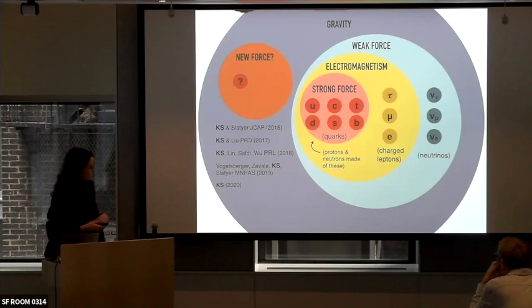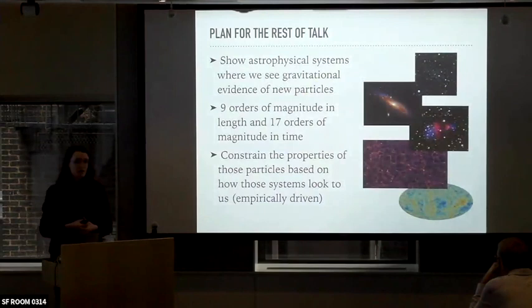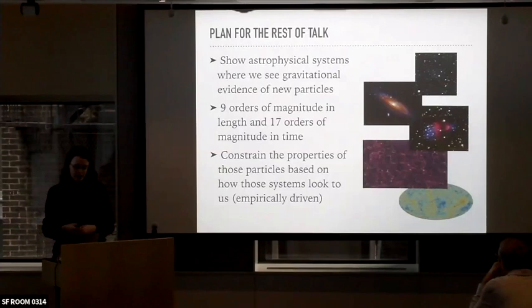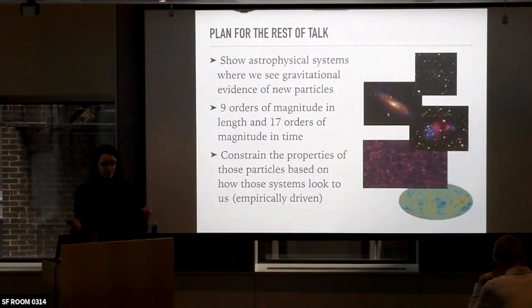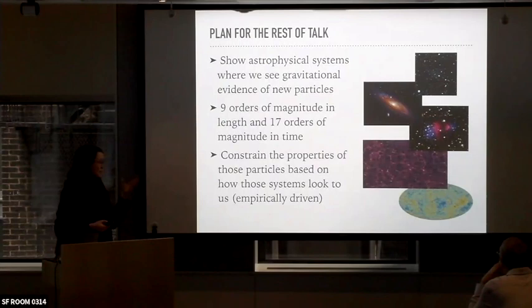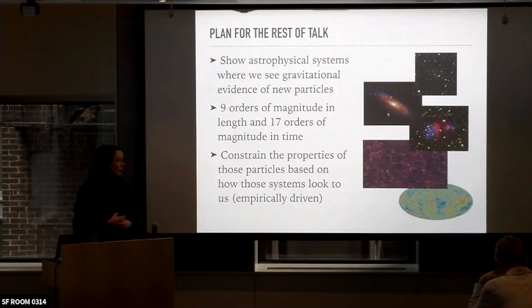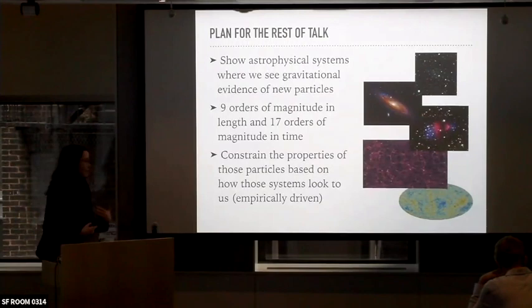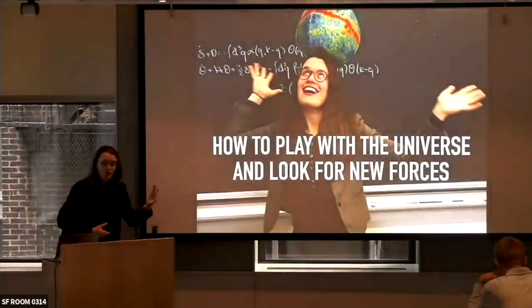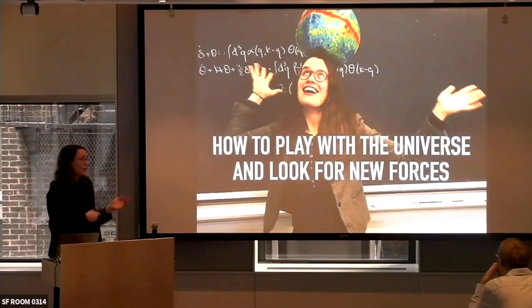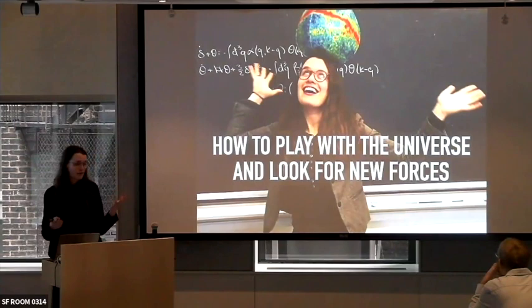To be more specific: the plan for the rest of the talk is to show examples of astrophysical systems where we see gravitational evidence for new kinds of particles. These systems span nine orders of magnitude in length and 17 orders of magnitude in time, providing a huge lever arm — a huge diversity of different systems, length scales, and time scales where we can test different kinds of theories. This is a very empirically driven outlook: I'm playing with the universe, tweaking the theory, and seeing what it looks like in order to look for new forces.